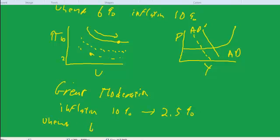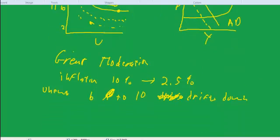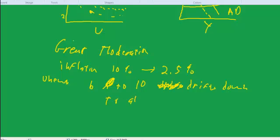Unemployment goes from 6% up to 10%. But then it drifts down over a period of about 20 years to about 4%. So at first the unemployment rate goes up as they try to cut back on inflation. But then gradually it moves back down.